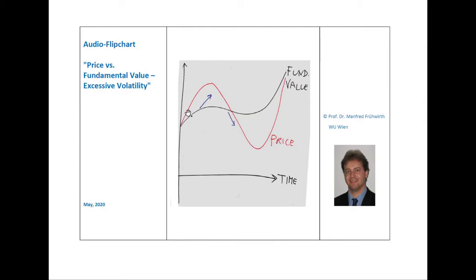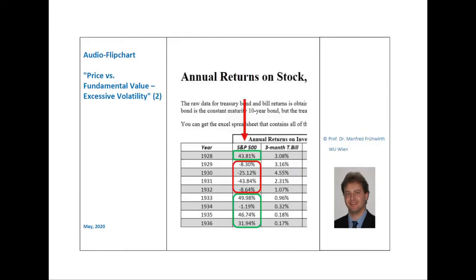The number of examples of this relationship between price and fundamental value is huge. One good example is the Great Depression, shown on page two. In this table, we can see the historical returns on the US stock market in the years around the Great Depression. Following a huge stock exchange gain in 1928, the Great Depression emerged with a series of severe losses from 1929 to 1932. After some years of heavy losses, the stock market realized that this decline was exaggerated, and as a result went up tremendously between 1933 and 1936.